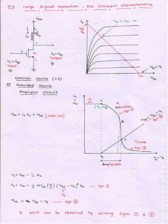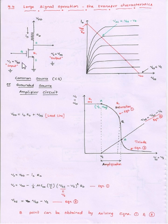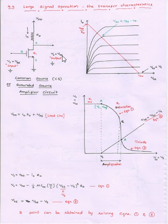The basic structure of the common source amplifier is as shown in this figure. The AC input voltage is applied at the gate with respect to the source, so VGS equals VI. The AC output voltage is measured at the drain point with respect to the source, so VDS equals V0.